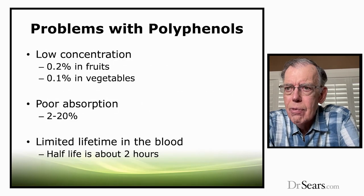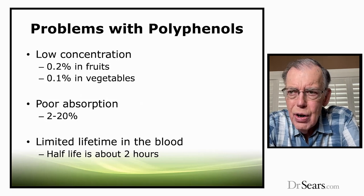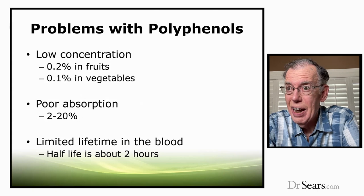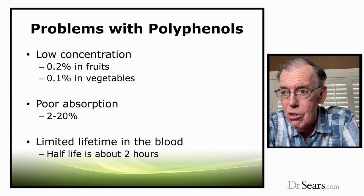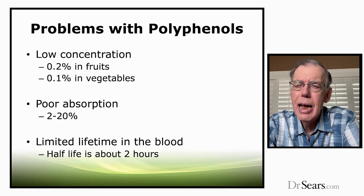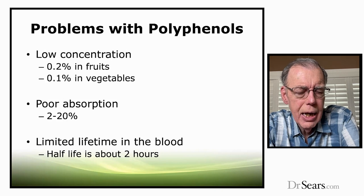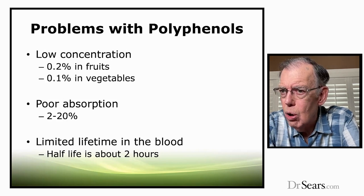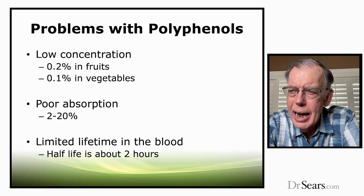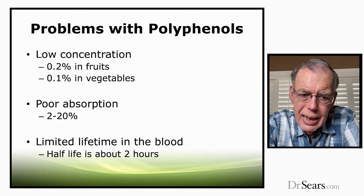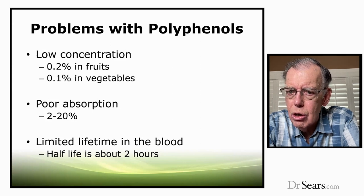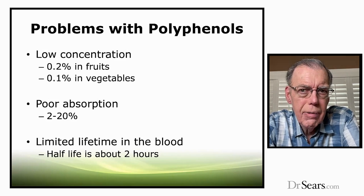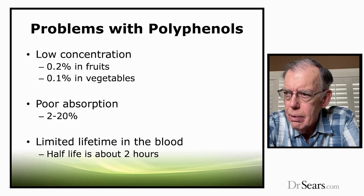Here are the problems with polyphenols. Even if you are eating fruits and vegetables, they're found in very low concentrations, which means you have to eat a lot — about 10 servings of fruits and vegetables per day. And that sounds like mission impossible. But even if you ate 10 servings per day, you have another problem: they're not very well absorbed. If they can't get into the body, they can't activate AMPK. And finally, if they do get in the body, they leave the body fairly quickly — their lifetime in the blood is very short.